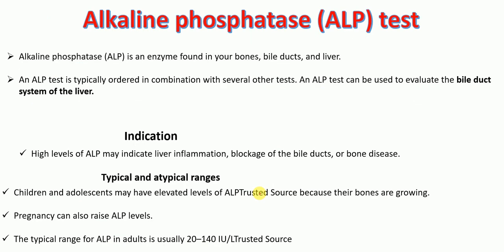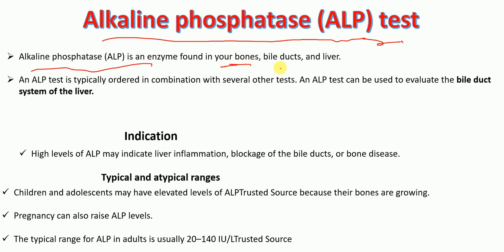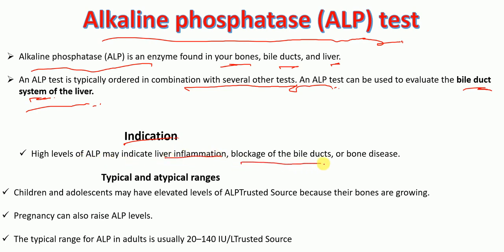The next test under liver function testing is called alkaline phosphatase test, or ALP test. Alkaline phosphatase is an enzyme found in your bones, bile ducts, and liver. An ALP test is typically performed in combination with other tests and can be used to evaluate the bile duct system of the liver. High levels of ALP may indicate liver inflammation, blockage of bile ducts, or bone disease.